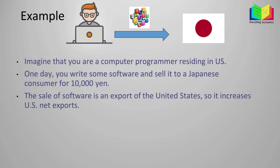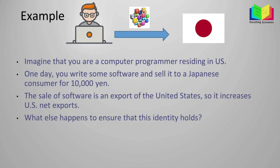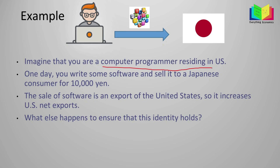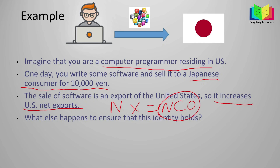Because you are a computer programmer in the US selling software to a Japanese consumer, this is considered an export for the US and an import for Japan. The net exports for the US increase by the equivalent of 10,000 yen in US dollars. Since we have the identity NX = NCO, net capital outflow must also increase by the same amount.